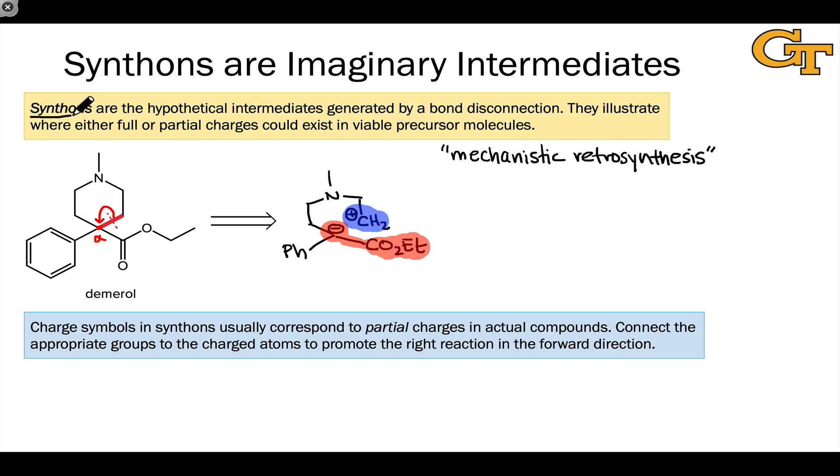Synthons are the hypothetical intermediates generated by a bond disconnection. Synthons illustrate locations where either full or, more commonly, partial charges could exist in actual viable starting materials for a transform. These locations corresponded to partial positive charge, whereas the negative charge here was actually a full negative charge in an enolate that was generated via deprotonation with LDA.